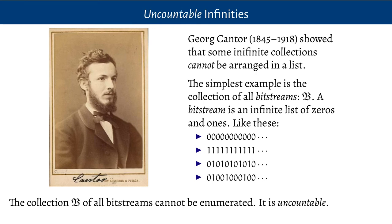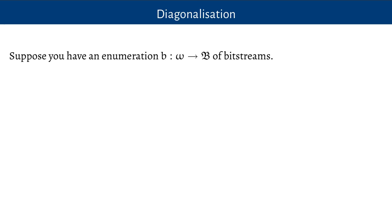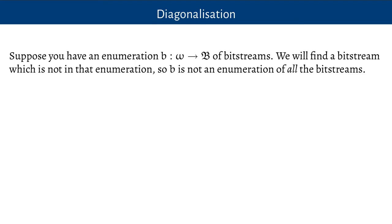A really nice theorem of Cantor's is that the collection of all bit streams cannot be enumerated — it is uncountable. The way he showed this is a process called diagonalisation, and it'll be easy to see why it's called diagonalisation when you picture his argument. Suppose you had some enumeration of bit streams — some function b which when given a natural number returns a bit stream. What we will show is that there will be a bit stream which is not in that enumeration. So the function b isn't an enumeration of all of the bit streams, and this argument is purely general — it works for any function from numbers to bit streams.